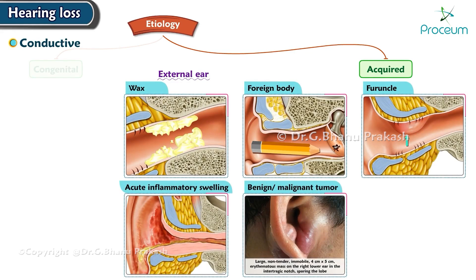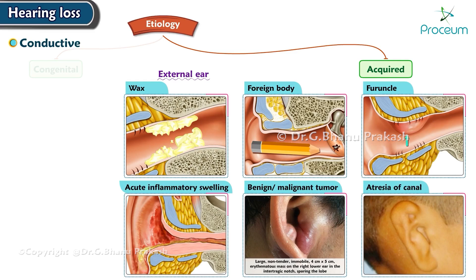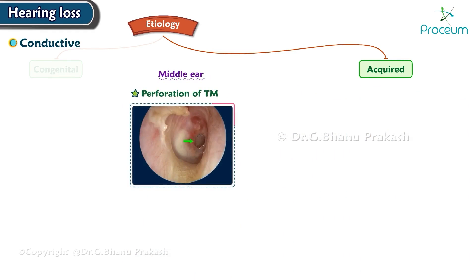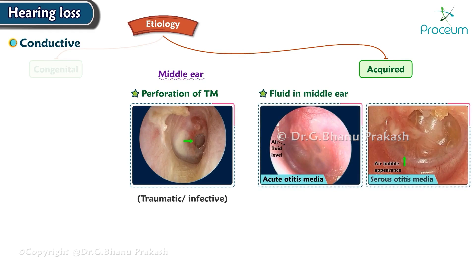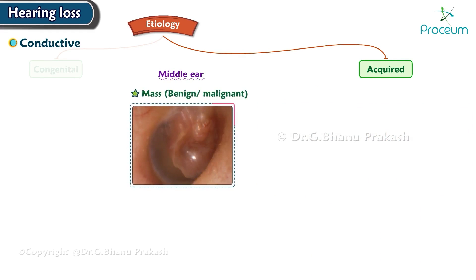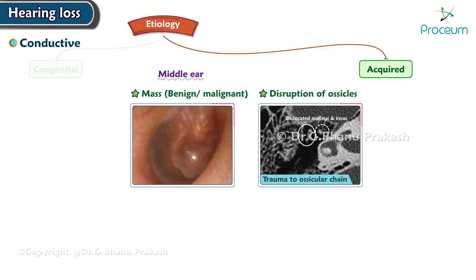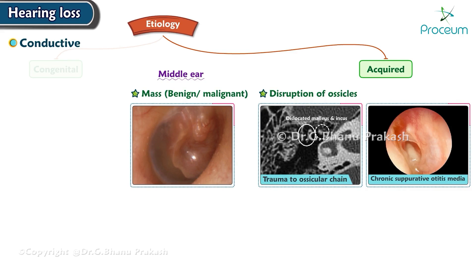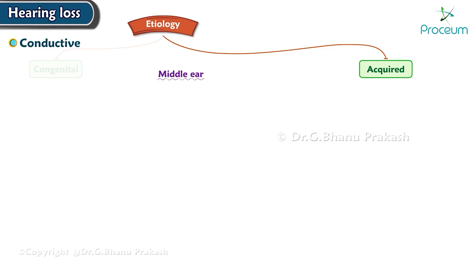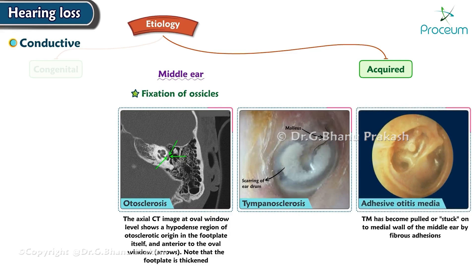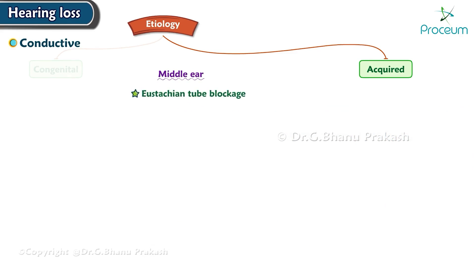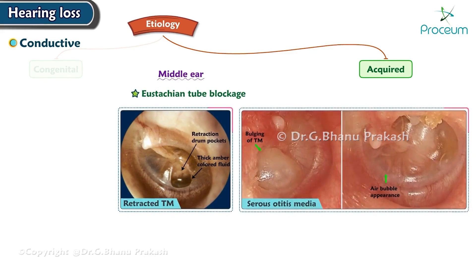Acquired causes include external ear obstructions such as wax, foreign body, furuncle, acute inflammatory swelling, benign or malignant tumors, or atresia of the canal. Middle ear causes include perforation of the tympanic membrane (traumatic or infective), fluid in the middle ear in conditions like acute otitis media, serous otitis media, or hemotympanum, mass in the middle ear, disruption of ossicles as in trauma, chronic suppurative otitis media, or cholesteatoma, fixation of ossicles in otosclerosis, tympanosclerosis, or adhesive otitis media, and eustachian tube blockage causing retracted tympanic membrane or serous otitis media.